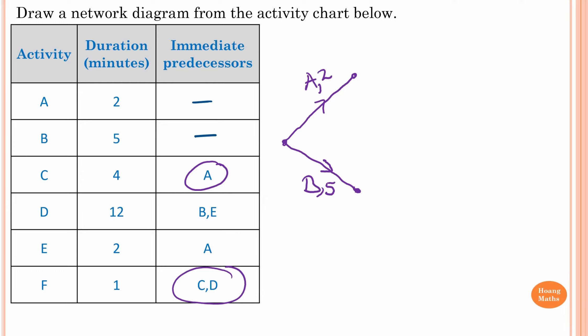I draw activity C first, starting from activity A, and the weighting is four. For activity D, B and E are the immediate predecessors — in other words, activity B and E are joined together.